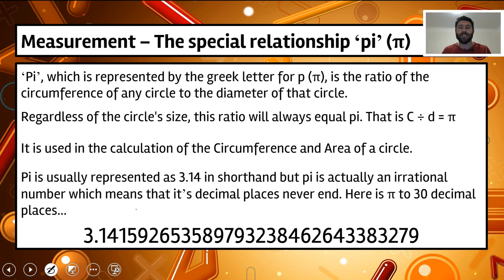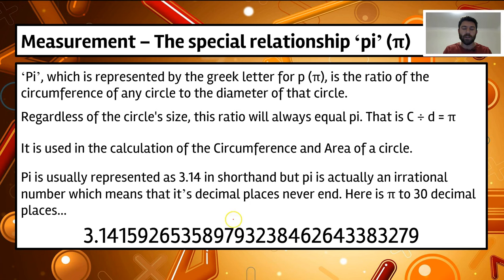Pi is a really strange number — it's actually an irrational number. Generally it's represented as 3.14 in shorthand, but because it's irrational, it actually goes on with infinite decimal places. I've put down here just a representation of pi to 30 decimal places. You can see it continues to go on forever.